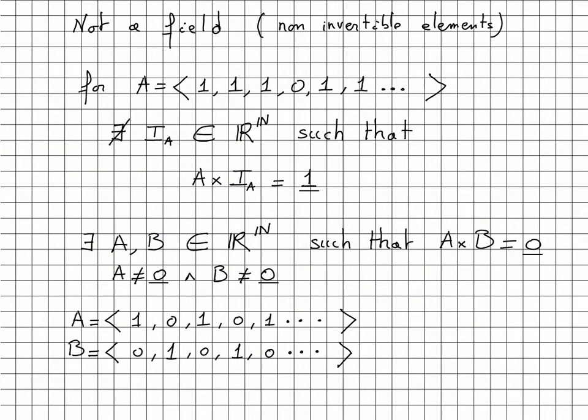We should also note that R^N does not form a field, as it has many non-invertible elements. For example, the sequence A, which is defined by 1 everywhere except here when we have 0. There is no element I_A such that A times I_A gives us the identity.